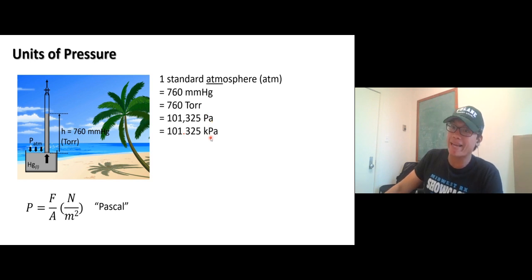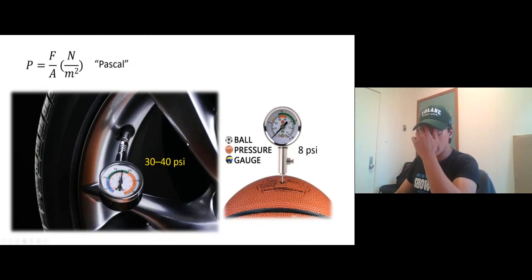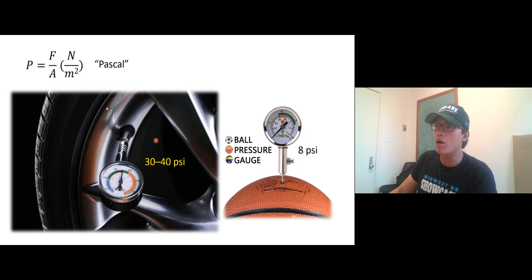We also have some other types of pressure. This one, usually in sport balls or in the pressure of your tire, we use PSI. PSI stands for pounds per square inch. Only the United States or maybe Canada uses PSI. It's a really confusing unit, so other people will use anything else but not PSI.